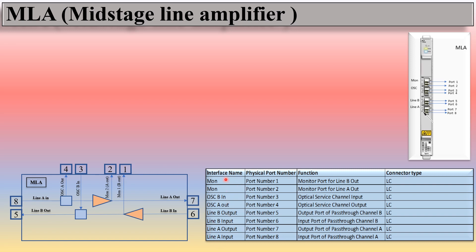The interface names: port one and port two are monitor ports — port one is monitor port for Line B out, port two is monitor port for Line A out. OSC B in is port three and OSC A out is port four — the optical service channel input and output. Line B output is port five, the pass-through channel B output. Line B input is port six. Port seven is the output of pass-through channel A and port eight is the input of pass-through channel A.